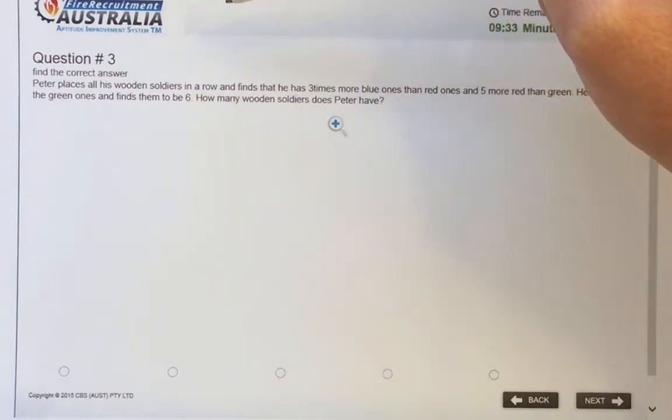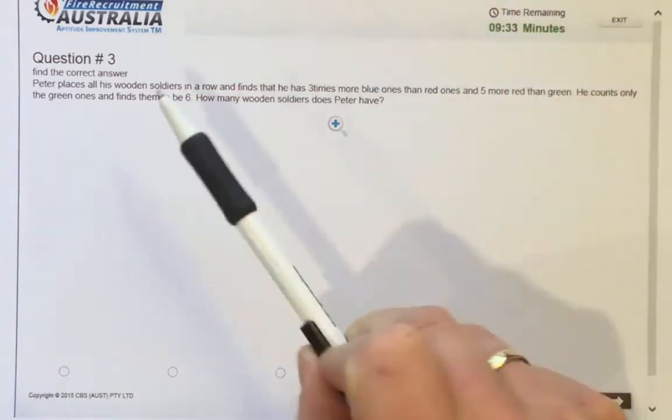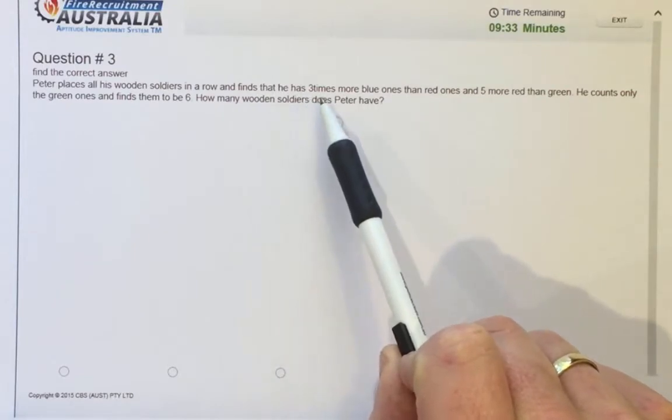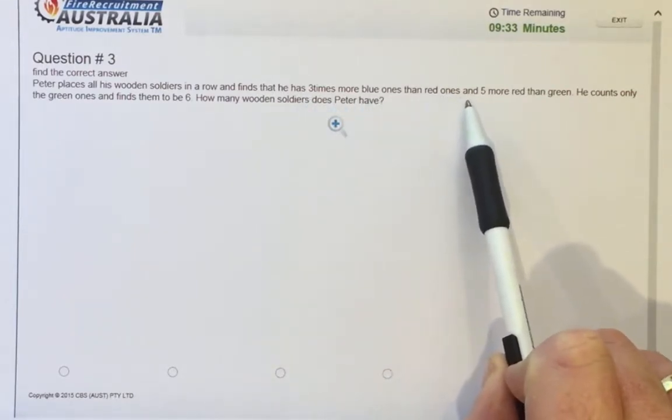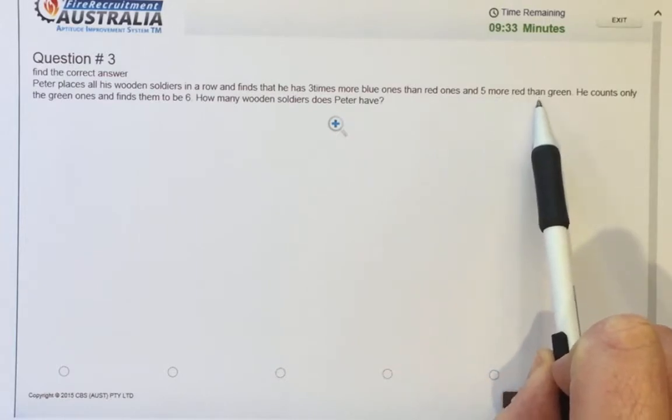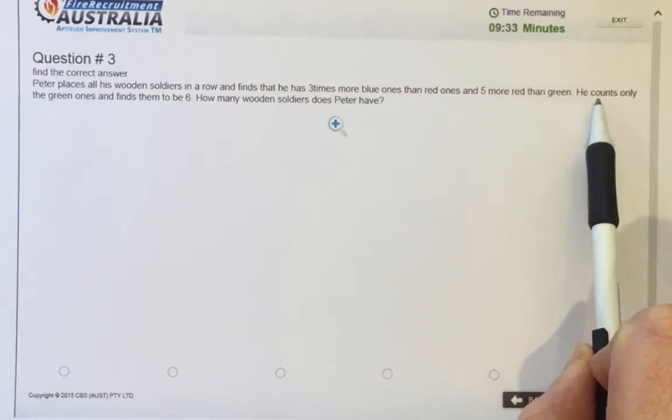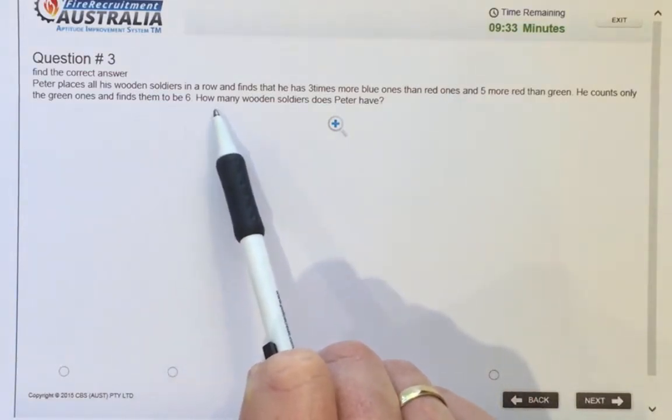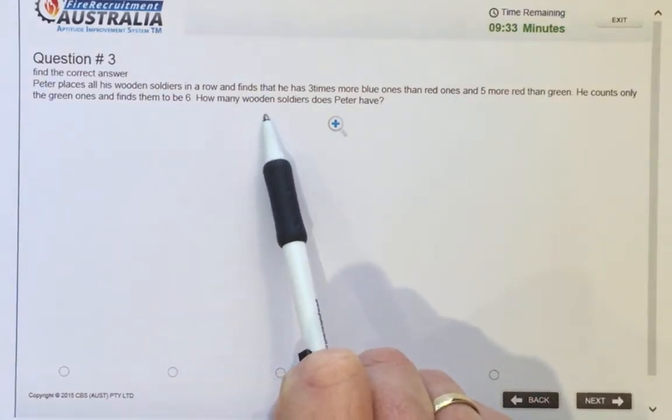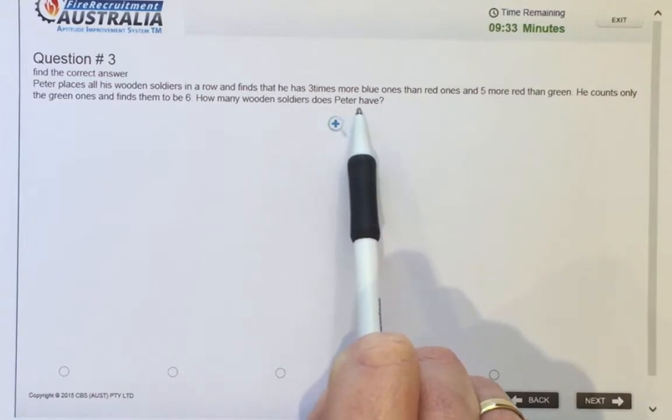Find the correct answer. Peter places all wooden soldiers in a row and finds that he has three times more blue ones than red ones and five more red than green. He counts only the green ones and finds them to be six. How many wooden soldiers does Peter have?